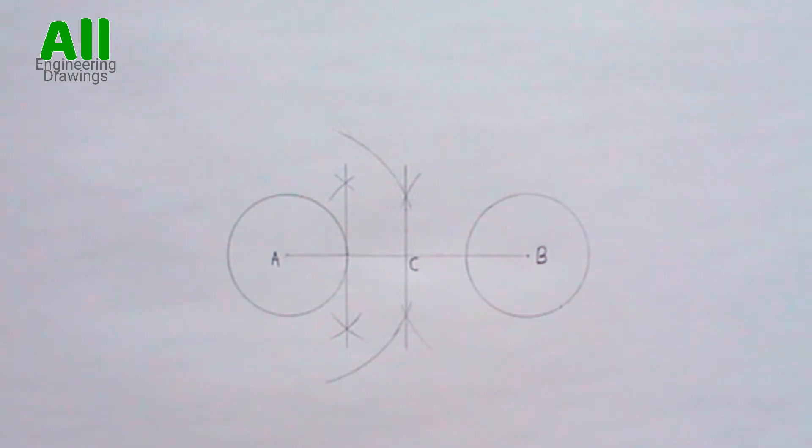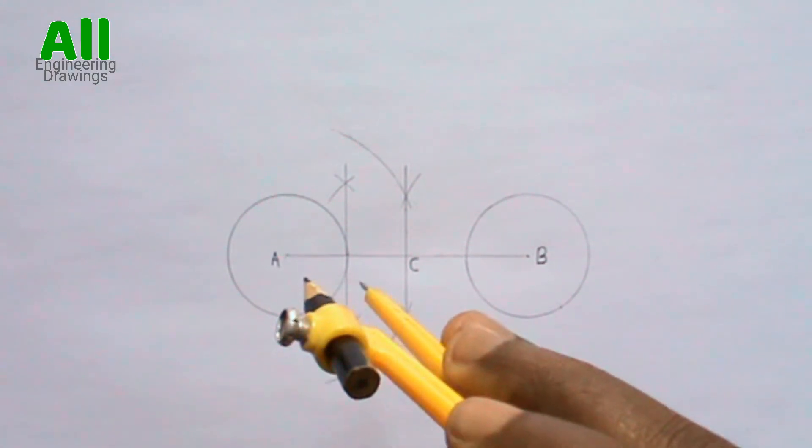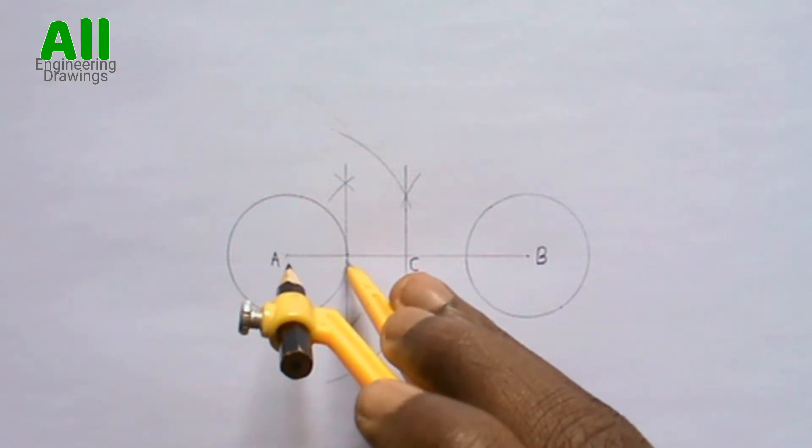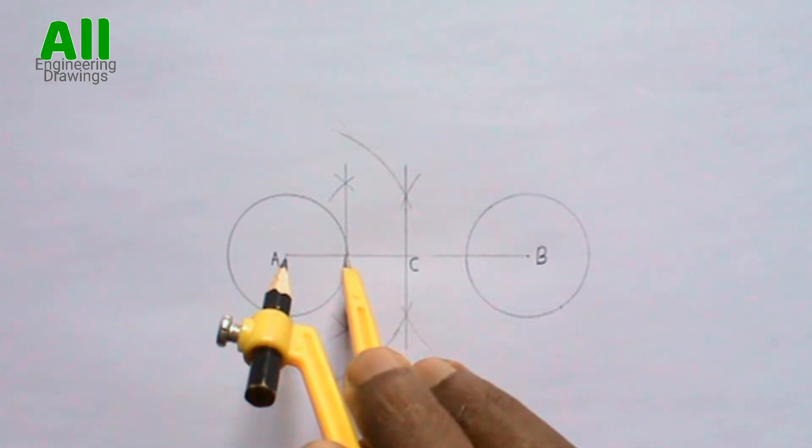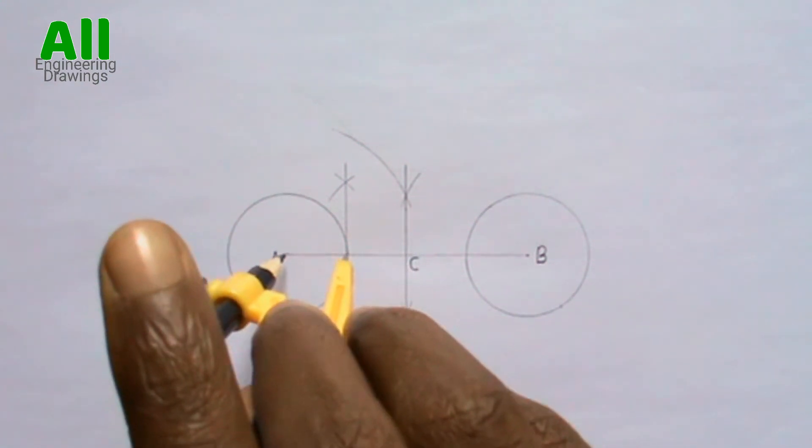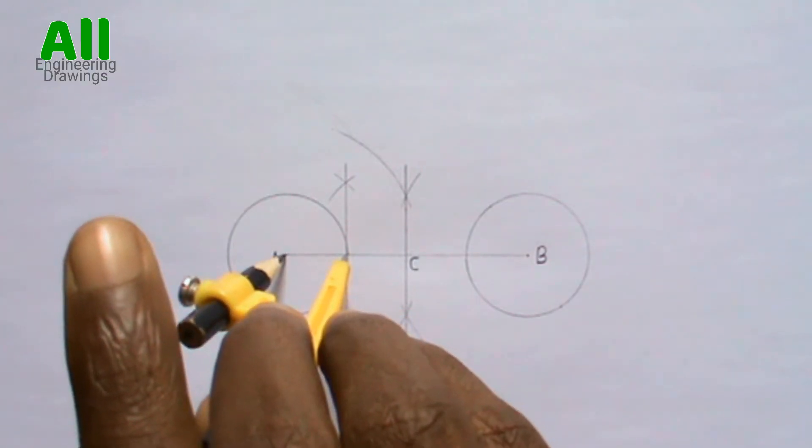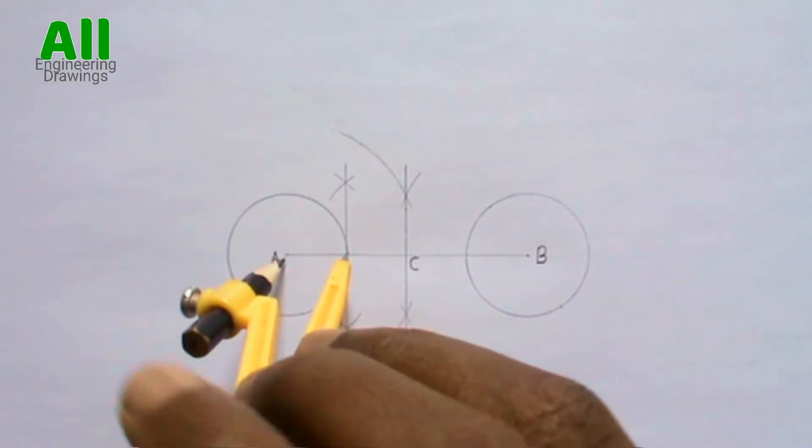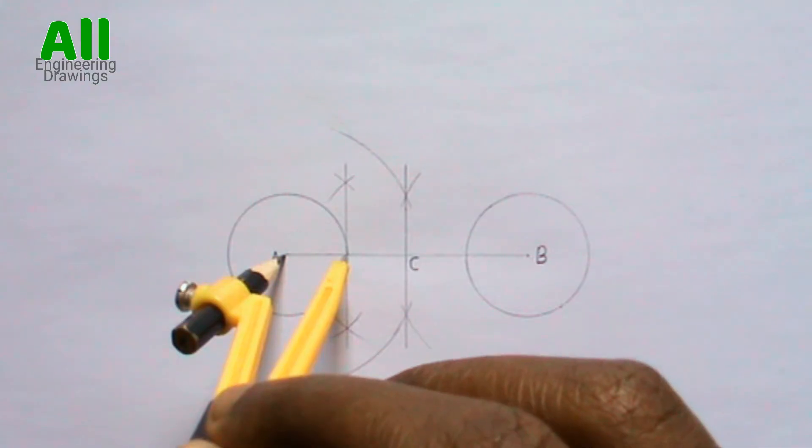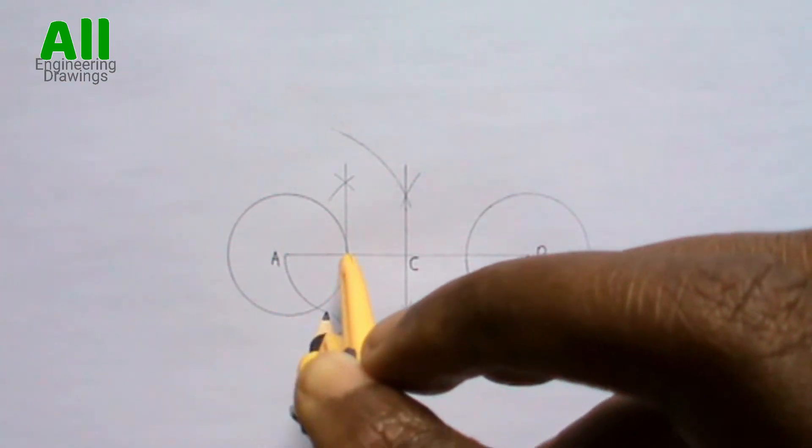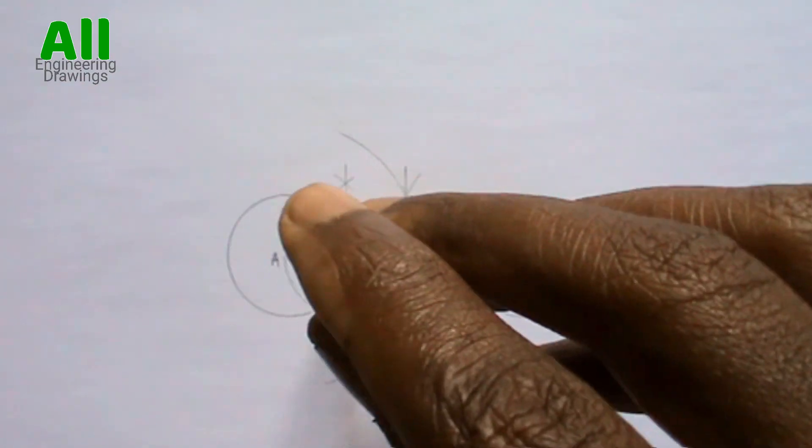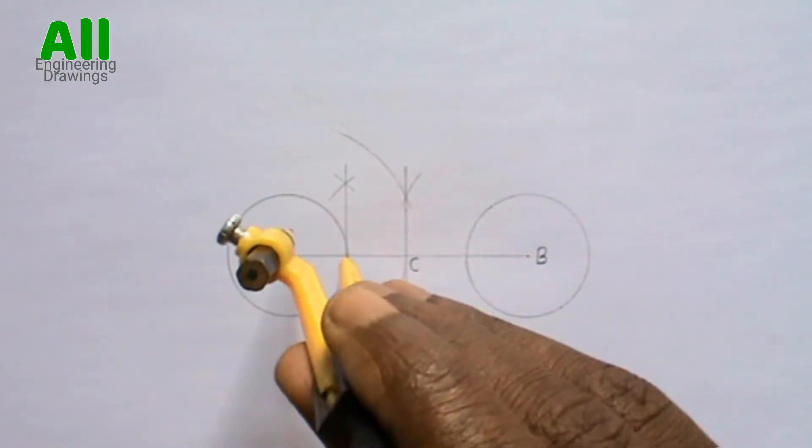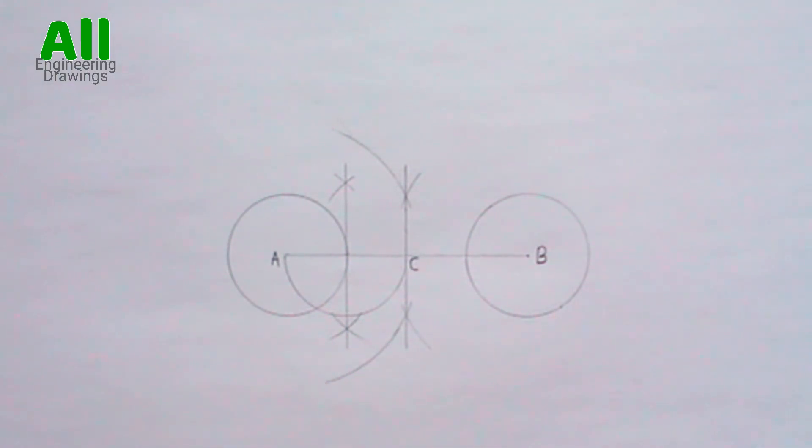Now, place your compass on the point where the bisector intersects line AC, that is this point. Then extend your compass to point A. Draw a semicircle this way. Label the point where the semicircle intersects the first circle.